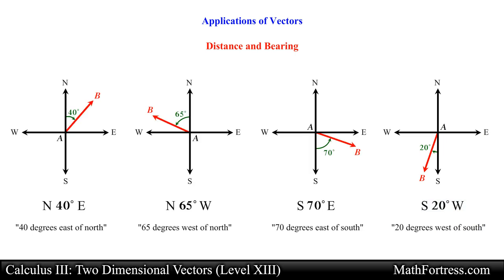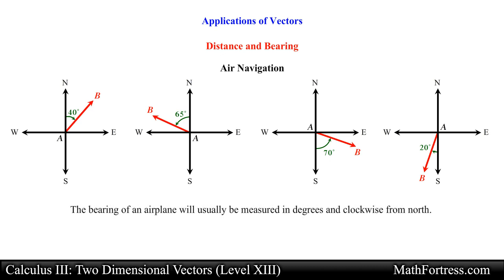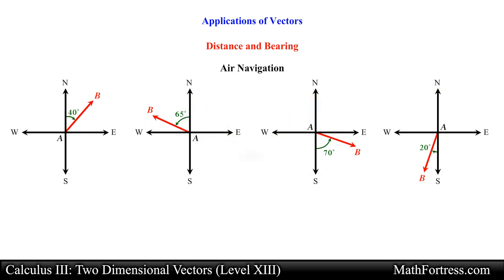If you are dealing with a problem that involves air navigation, the bearing of an airplane will usually be measured in degrees clockwise from north. This could be confusing because it goes in the opposite direction of the standard angle convention learned in your math courses. For example, if these same bearings represented the direction of an airplane, they would be denoted as follows.